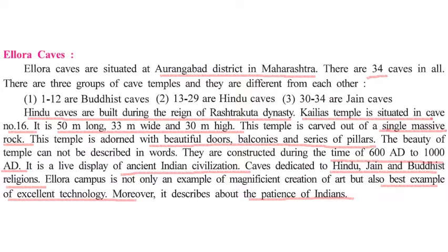Next are the Caves of Ellora. Ellora and Ajanta are always spoken of together because they are very close to each other. The Ellora Caves are also situated in the Aurangabad district of Maharashtra, and there are 34 caves. These 34 caves are distributed into three different religions: caves 1 to 12 are Buddhist caves, 13 to 29 are Hindu caves, and 30 to 34 are Jain caves.